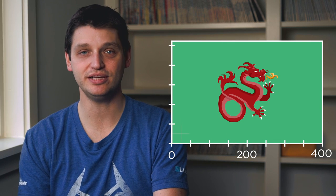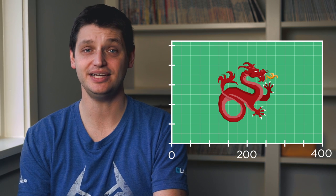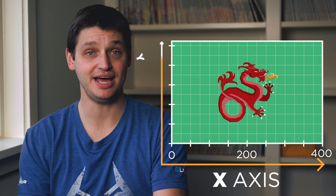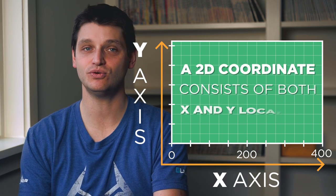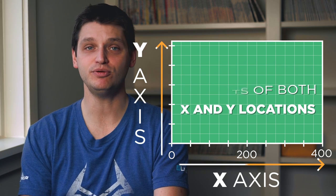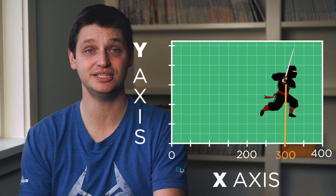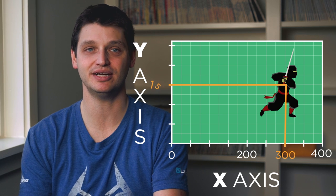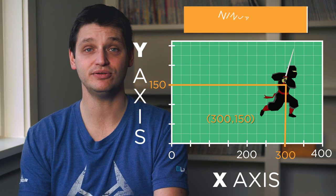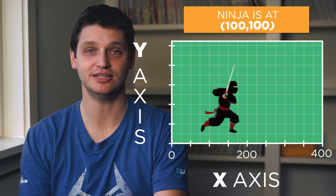By adding a second number line, we can locate a character anywhere on the screen in either dimension. The first line is called the x-axis, which runs from left to right. The second line, which runs up and down, is called the y-axis. A two-dimensional coordinate consists of both the x and the y locations on the axis. We can find the x-coordinate by dropping a line down from the sprite and reading the position on the number line. The y-coordinate is found by running a line to the y-axis. With two numbers — x and y-coordinates — we can describe the location of any sprite on our screen, and by changing those numbers, we can get our sprites to move around on the screen.